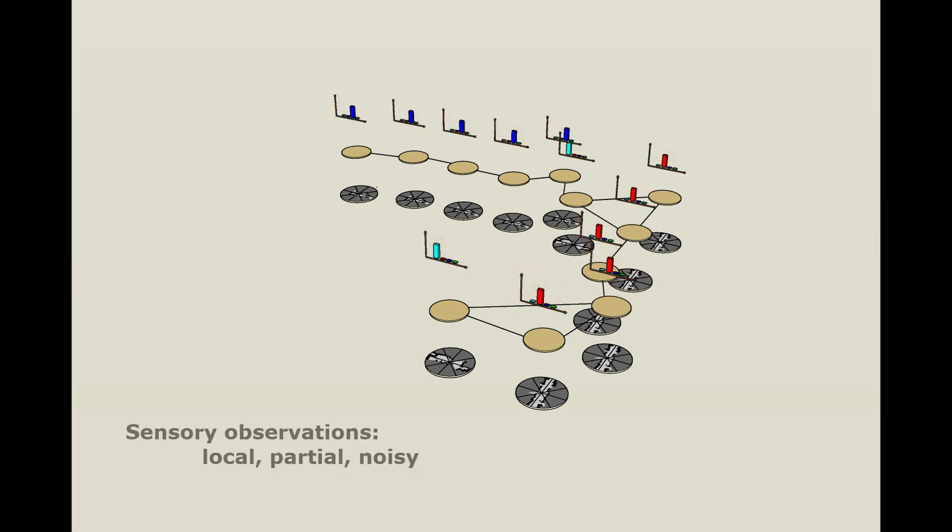Yet, robot's sensory observations are local, partial and noisy. At the same time, a robot can exploit the general relationships that govern the human world to resolve ambiguities and infer latent concepts.